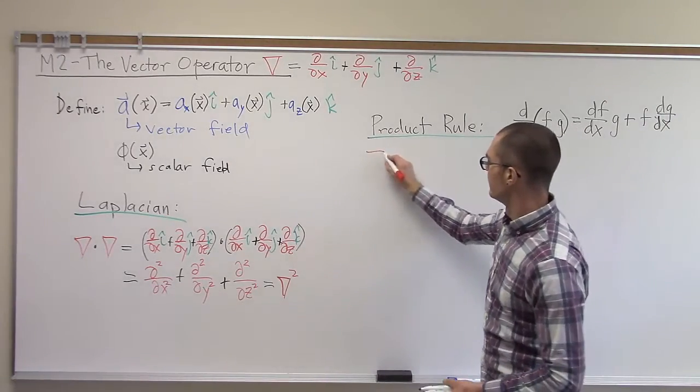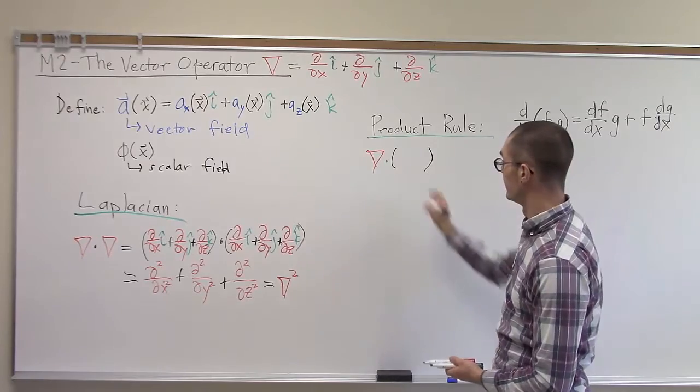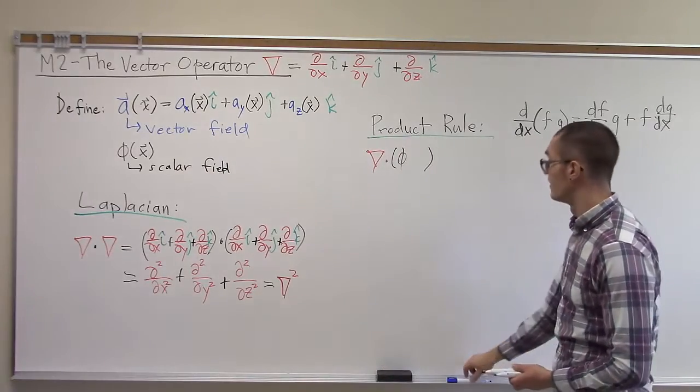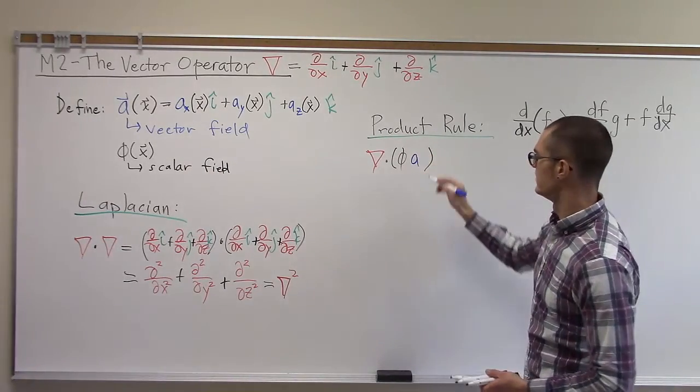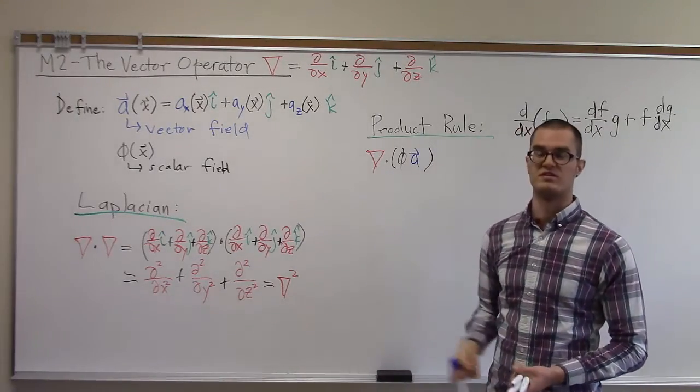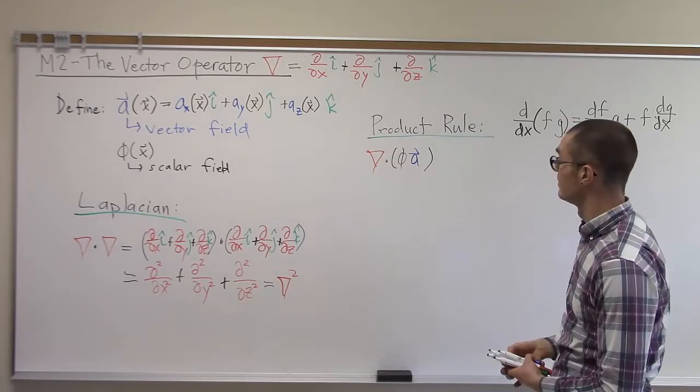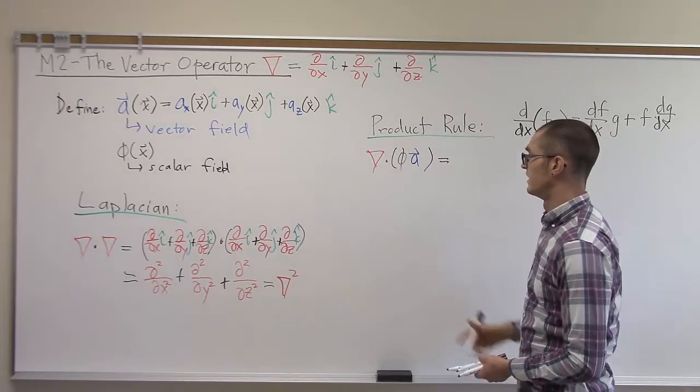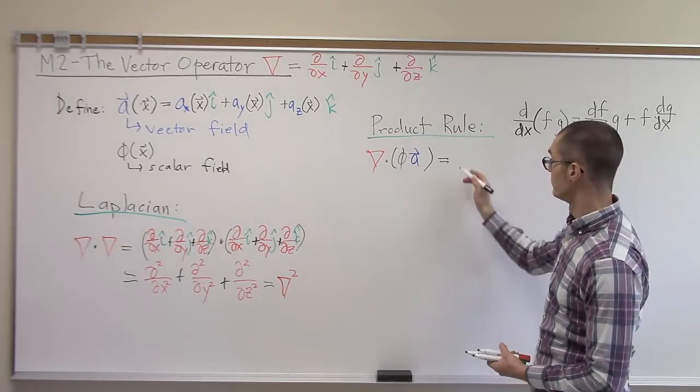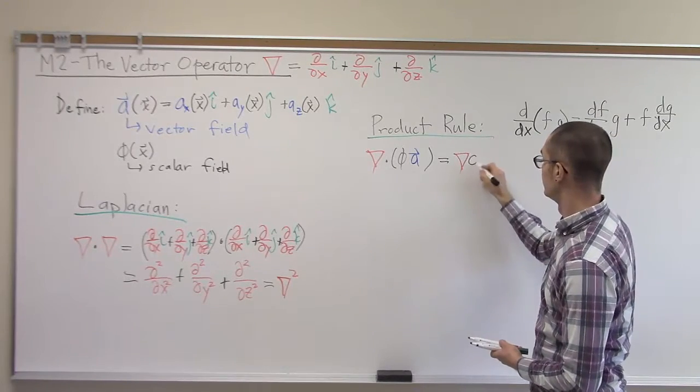Let's say I want to take the divergence of a vector field that I get through scalar multiplication of a scalar field, which is a function of x, x being a vector here, and a, which is a vector field, where all components are functions of all three variables. I have to be careful about how I expand that. I cannot take the divergence of a scalar field, phi.